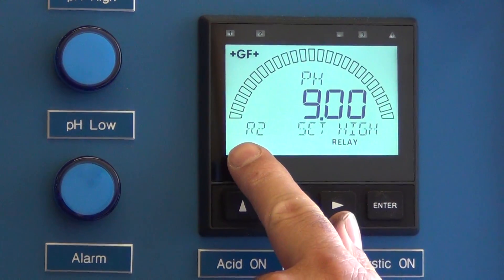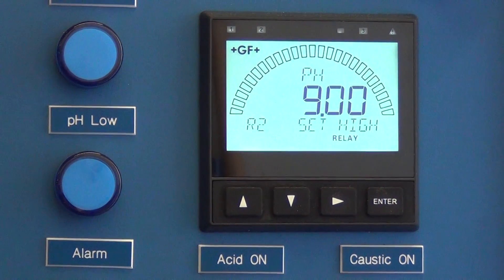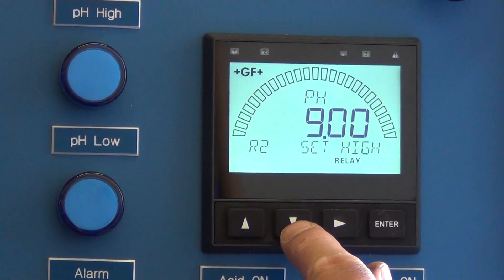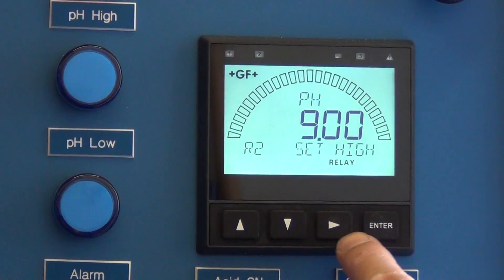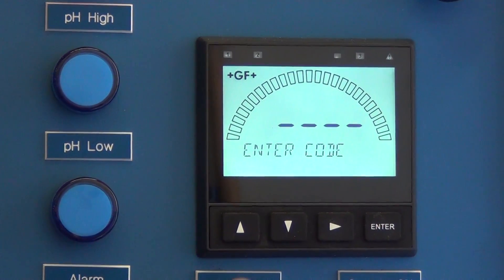We want to go to this screen. If I wanted the acid pump to begin pumping at, say, 9.2 or above, go to this screen and then press the right arrow and then enter the code.